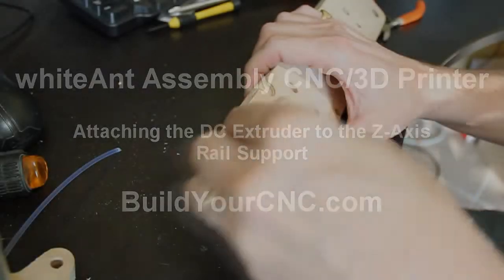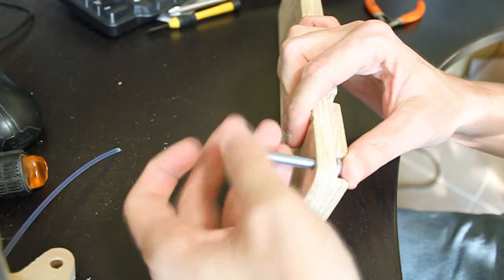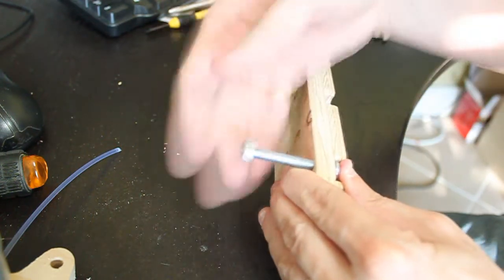To provide for the maximum reach for the extruder assembly, this assembly will be mounted to the end of the Z-axis rail support.